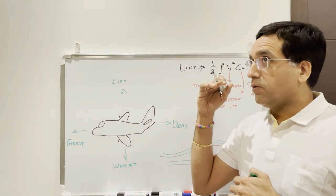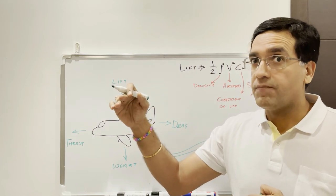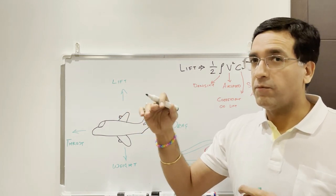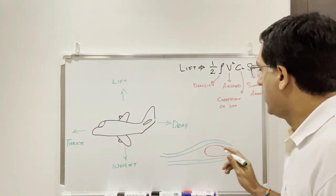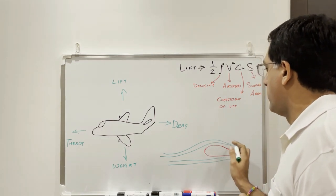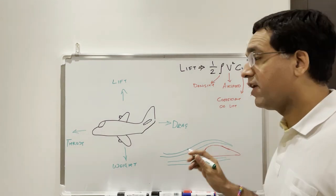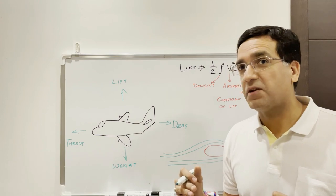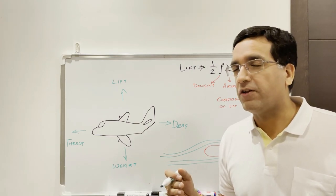The airflow is essentially just paralleling the bottom of the wing, which is quite flat. Now what happens in this process of traveling a longer distance is the air has to pick up speed. It's called the venturi effect.